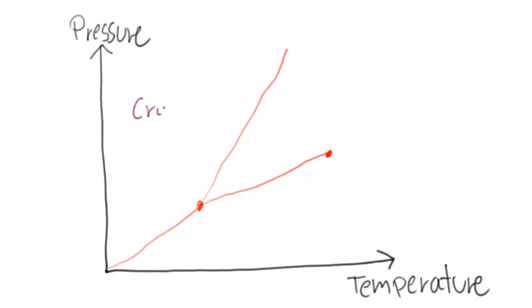This is a typical phase diagram with a crystal phase, a liquid, a gas phase, a triple point and a gas-liquid critical point.